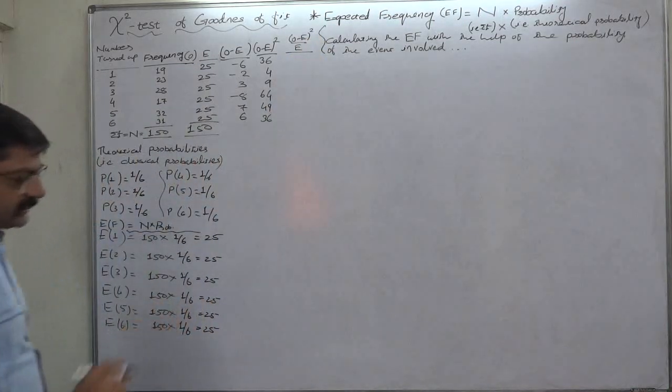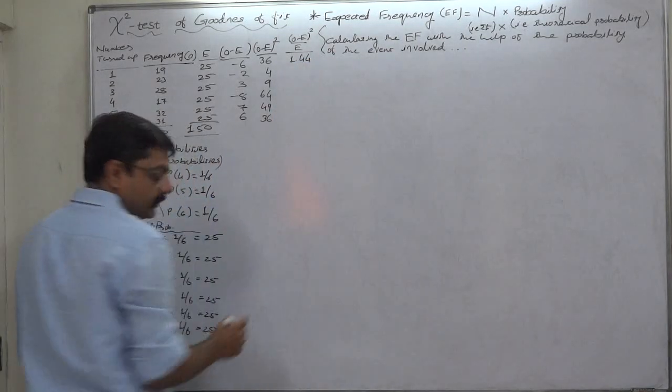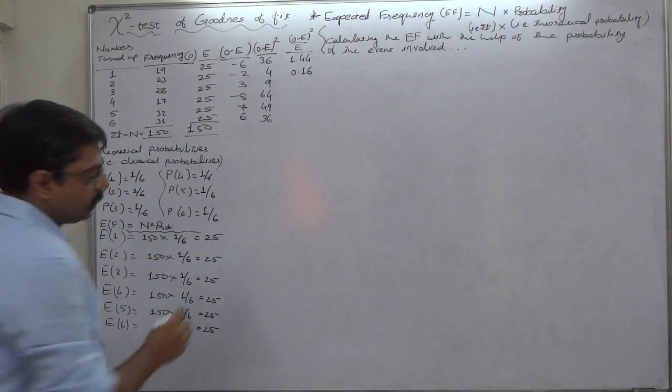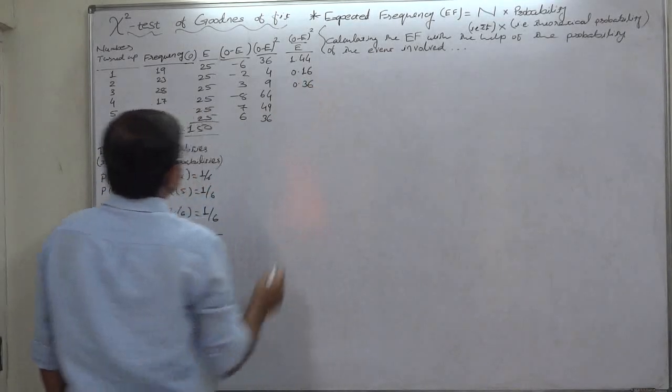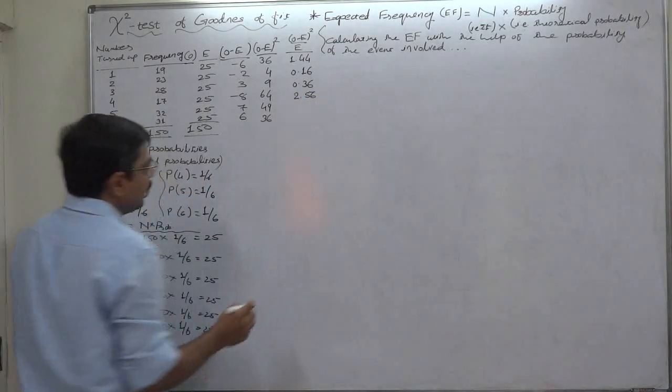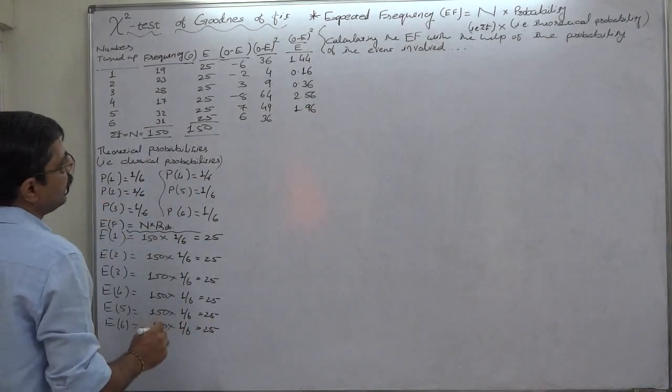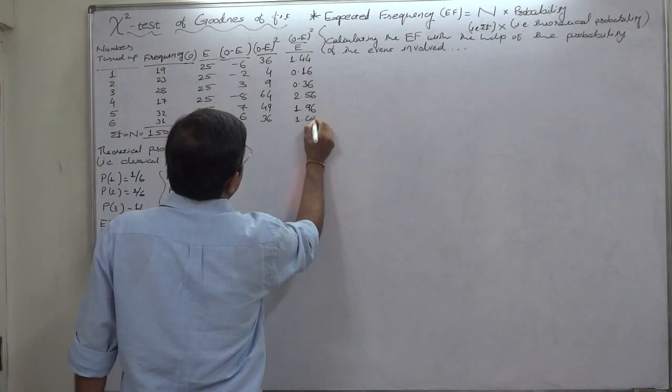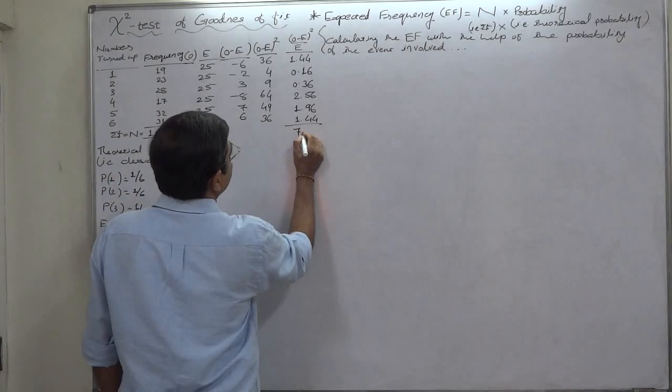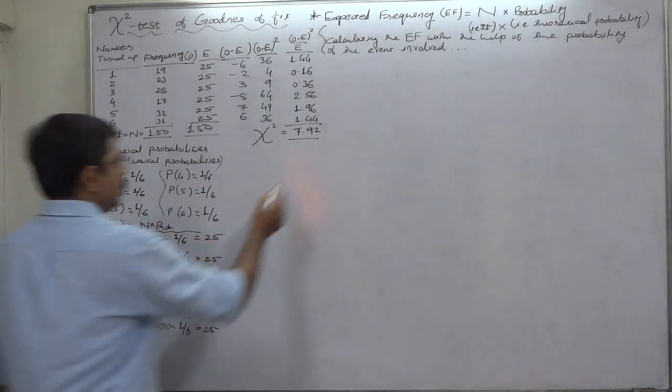O minus E the whole square divided by E: 36 divided by 25 is 1.44, 4 divided by 25 is 0.16, 9 divided by 25 is 0.36, 64 divided by 25 is 2.56, 49 divided by 25 is 1.96, and 36 divided by 25 again 1.44. The total of these values is 7.92, and the total itself is the chi-square or calculated value of chi-square.